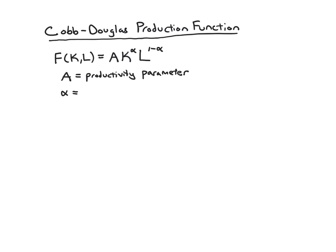Alpha is another parameter and we call it the capital's share — a strange name, but by the end of the video it'll make sense. We'll come back to explaining why alpha is called the capital share parameter. The first question we can ask about Cobb-Douglas is: is it constant returns to scale (CRS)?